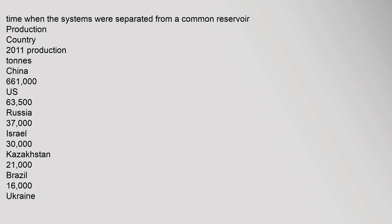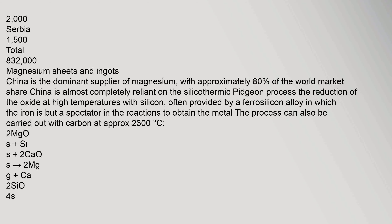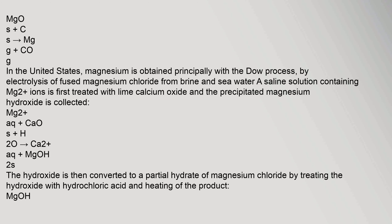2011 Production (tons): China 661,000; US 63,500; Russia 37,000; Israel 30,000; Kazakhstan 21,000; Brazil 16,000; Ukraine 2,000; Serbia 1,500; Total 832,000. China is the dominant supplier of magnesium with approximately 80% of the world market share. China is almost completely reliant on the silicothermic Pidgeon process.